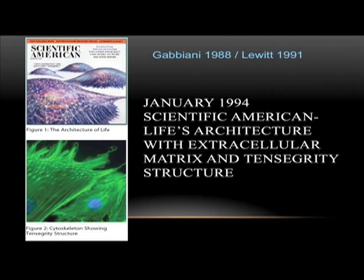Here we have a stained slide of alpha smooth muscle actin. Schleip, Klingler, and Lehman Horn out of Germany discovered these particular cells related to connective tissue around 2005, demonstrating that the actin of connective tissue shows contractility.